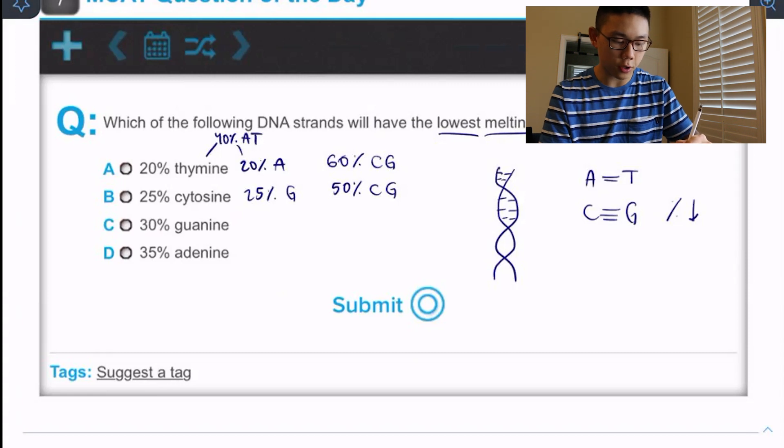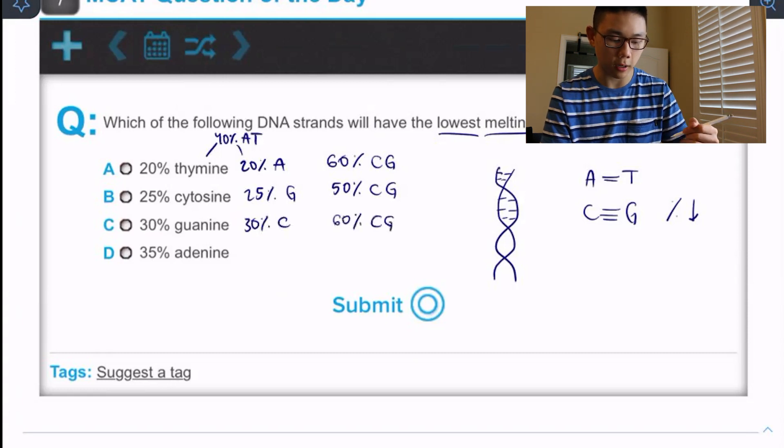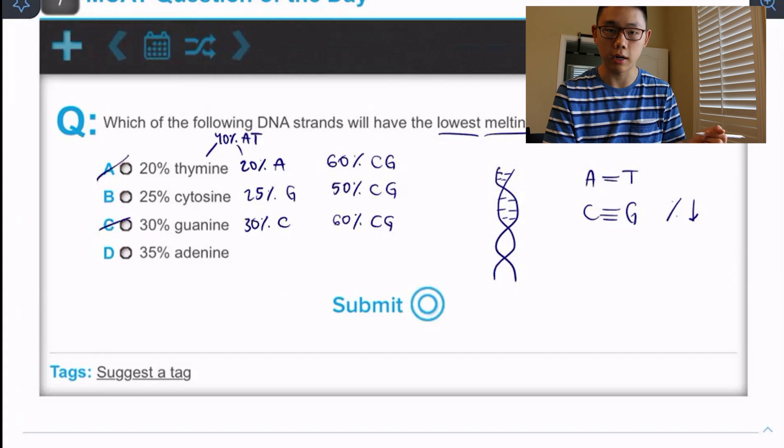Next choice, 30% guanine gives us also 30% cytosine, which tells us we have cumulative 60% C G base pair. A and C are essentially the same. And so we can say they're wrong because they can't be both correct.